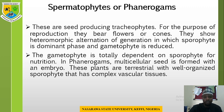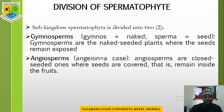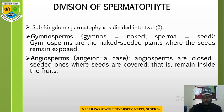In phanerogams, a multicellular seed is formed with an embryo, and the plant has a well-developed sporophyte with complex vascular tissues. The spermatophyte is divided into two divisions or two classes: the gymnosperm and the angiosperm.